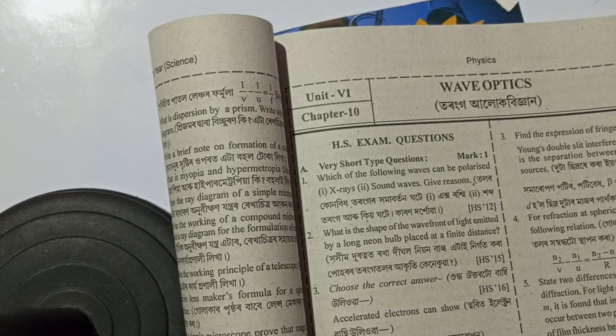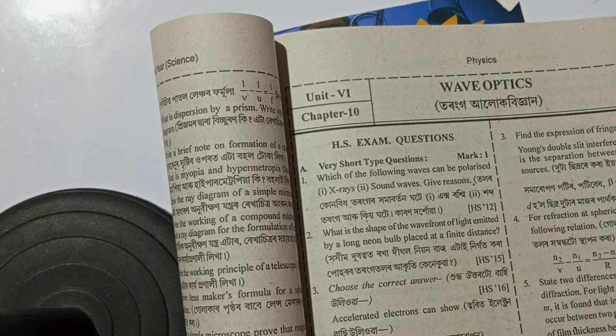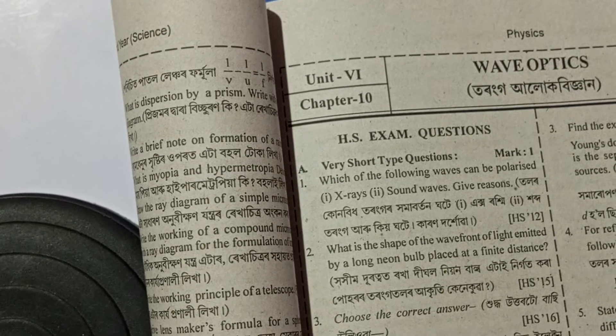Next question is: what is the shape of the wave front of light emitted by a long neon bulb placed at a finite distance?